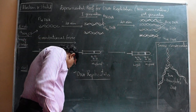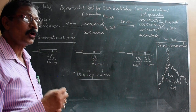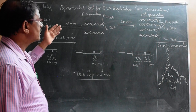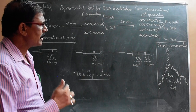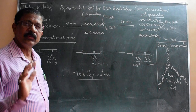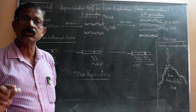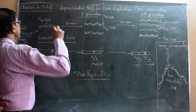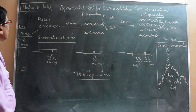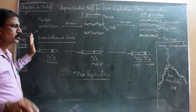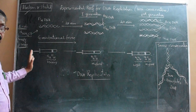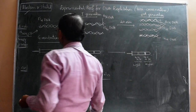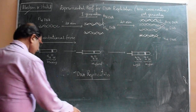Similar experiments were also done by many other scientists in different organisms, and they got almost the same result as the Meselson-Stahl experiment. This exactly means that in all living beings, during DNA synthesis, one old strand and another new strand is conserved - that is why it is called semi-conservative. This semi-conservative process experiment was designed by Meselson and Stahl. This may be asked as a five-mark question - remember, you have to draw the diagram as well.